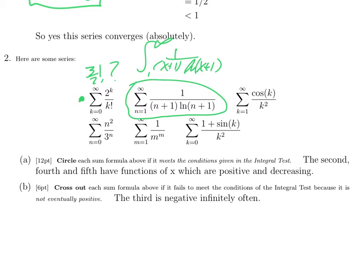Cos k over k squared. Cos k is constantly jumping between positive and negative pretty much randomly. If you look at the integers, there's no easy recognizable pattern there. So this is definitely not, it is not even eventually positive.